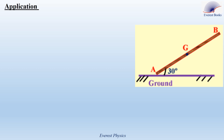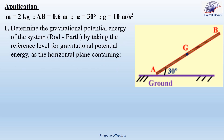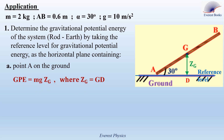Now let's solve an application about gravitational potential energy. Consider a uniform rod of mass M = 2 kg and length AB = 0.6 m making an angle of 30 degrees with the horizontal. The gravitational acceleration is 10 m/s². The first question: determine the gravitational potential energy of the system rod-Earth by taking the reference level as the horizontal plane containing point A on the ground.